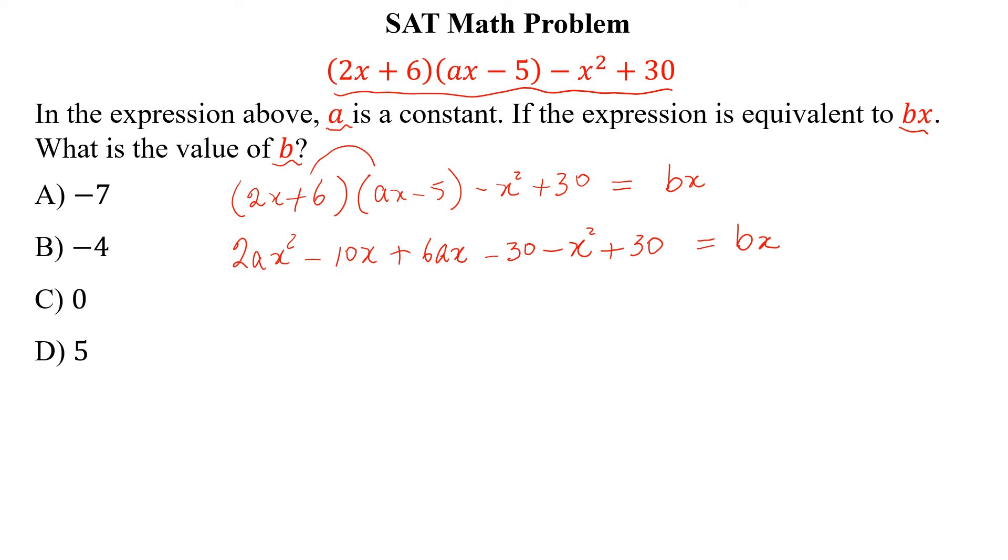Minus 30 and plus 30 are cancelled. And we will take common x² from this term and this term. So, x²(2A - 1) and take x common from these two terms. So, plus x(-10 + 6A) is equal to Bx.